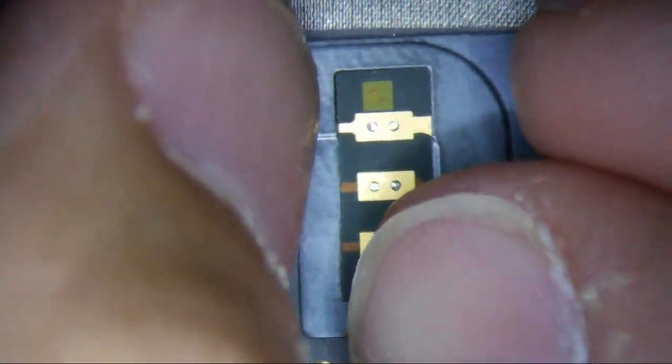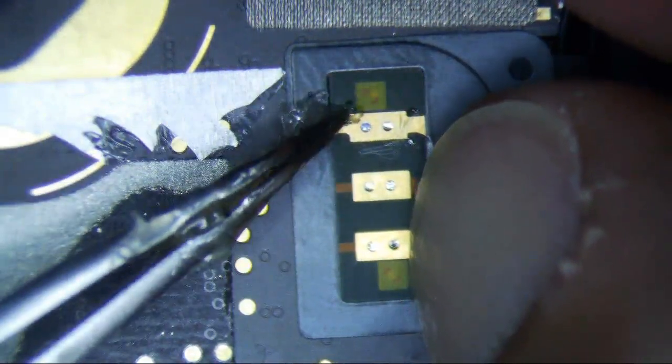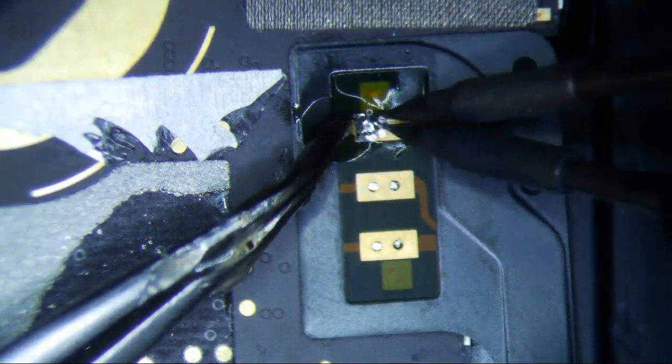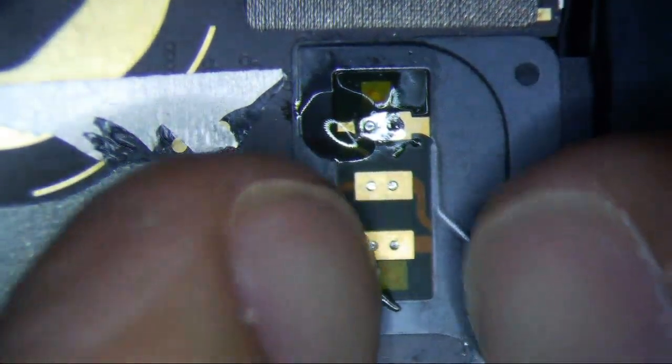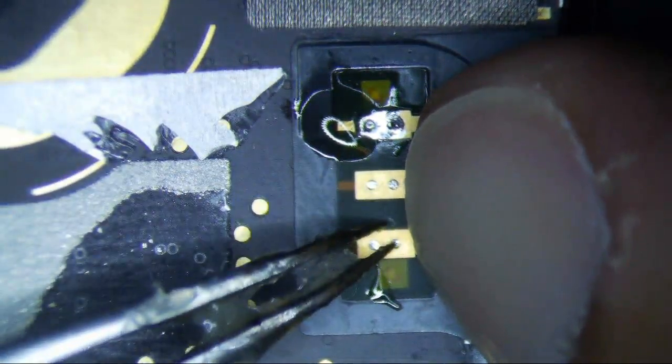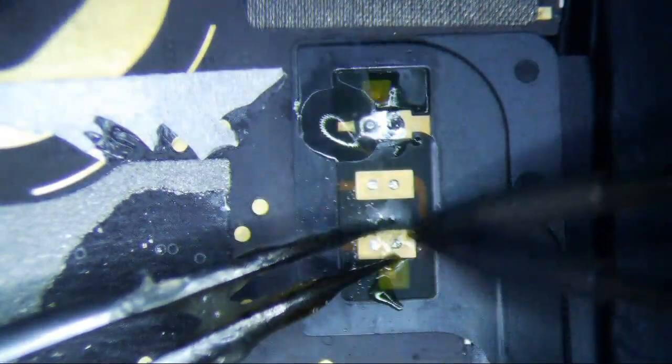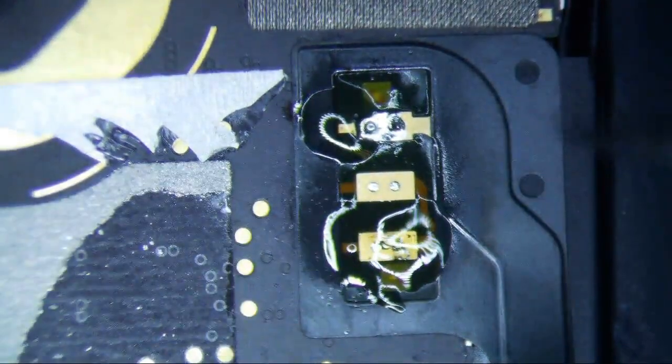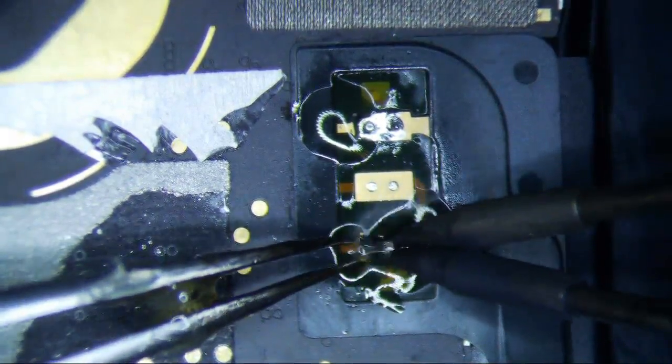And then once you have it kind of centered, you can put some flux on. That's kind of centered and you can just tack just one side down first. Just a little bit. And then make sure this side is aligned. Just make sure you have some flux. Flux is important. It would help if I had some solder at the end of my thing here, but I don't because I want to tack it down. Now I'm going to put a little bit of solder. That may be a little too much but we'll go with it.